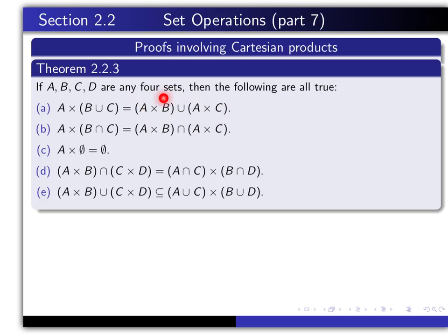On the other hand, when you're looking at an element of the right-hand side, you shouldn't see the Cartesian product first — you should see the union first, because it's a union of the two sets A cross B and A cross C. And therefore, if you have an X, Y in here, it's either X, Y is in A cross B, or X, Y is in A cross C. If X, Y is in A cross B, then X is in A and Y is in B. And if X, Y is in A cross C, then X is in A and Y is in C. So the challenge in this problem is to understand the working definition of Cartesian product and union and to use those properties in the right order.